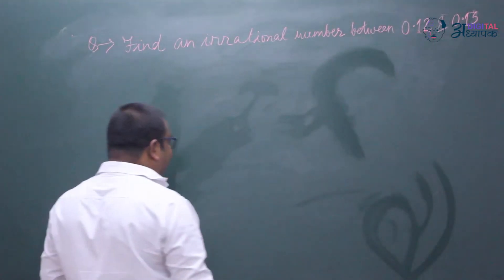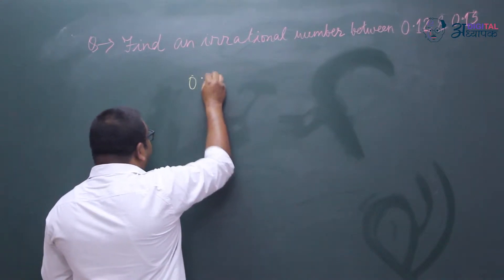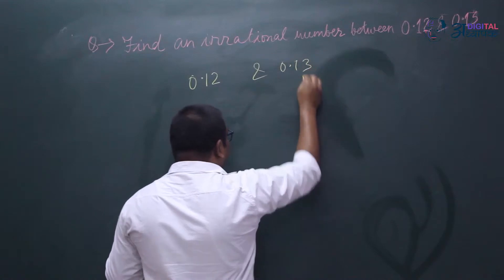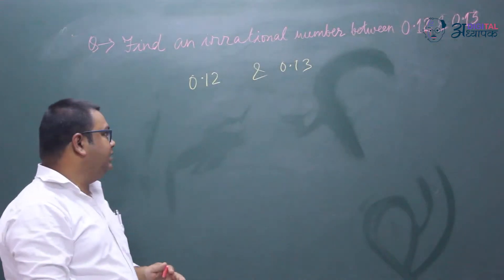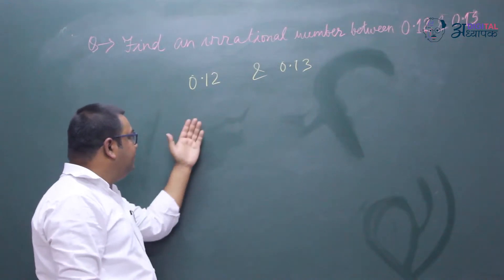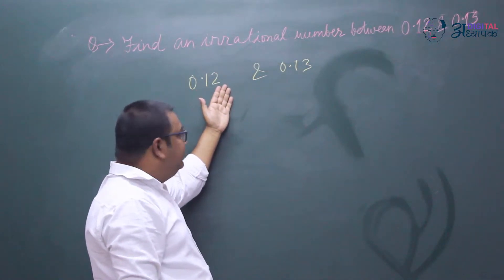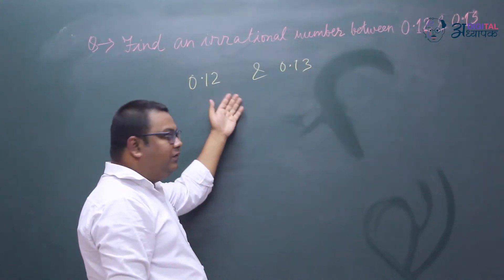Now students, if we can see these two numbers, 0.12 and 0.13, let us try to find certain rational numbers which are between them. So the first rational number between them is 0.121, then 0.122, 0.123, 0.124, 0.125, and so on.